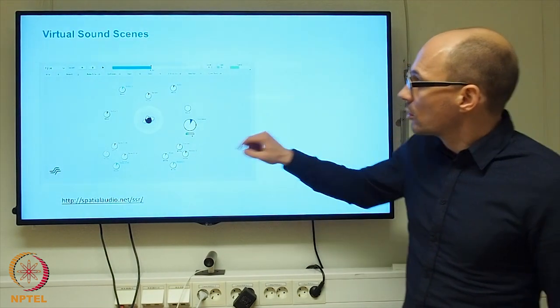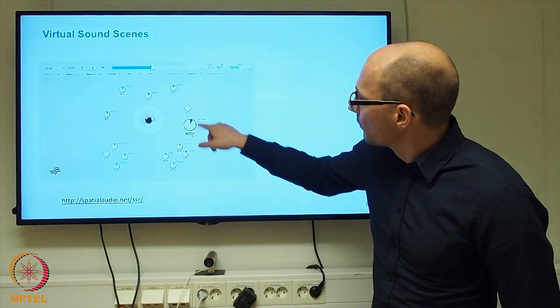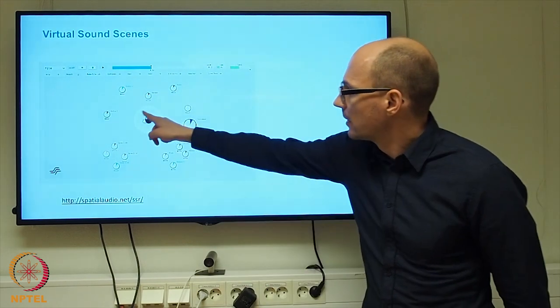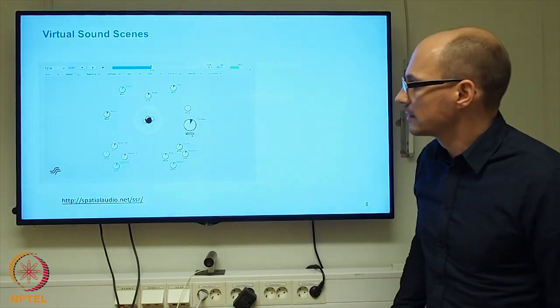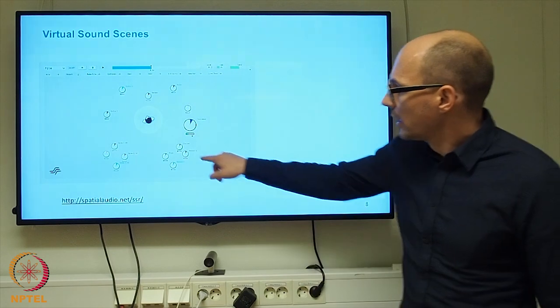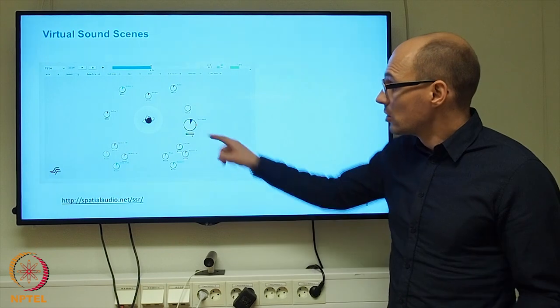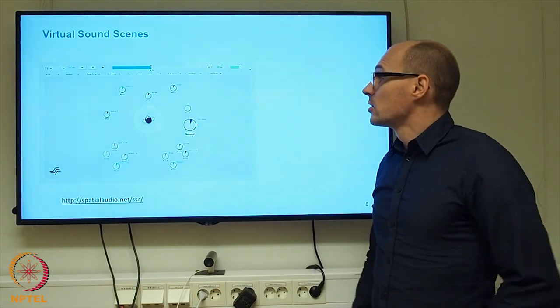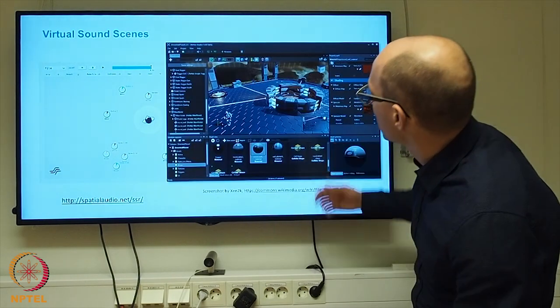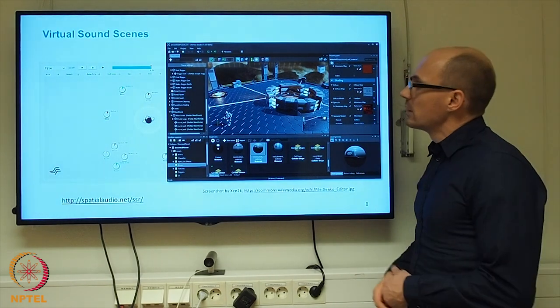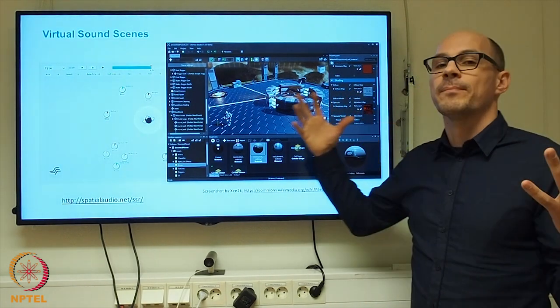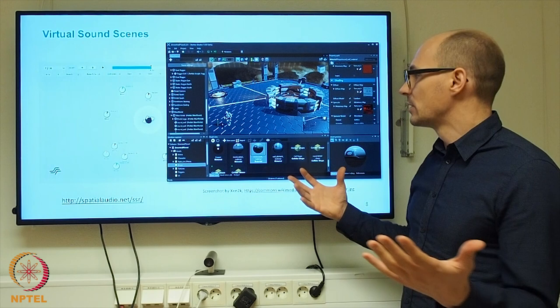So this would allow us to compose a sound scene of virtual sources, like it is the case here in the center. This little object indicates the user, and the other objects are virtual sound sources in this scene, so they all have a position associated to it. This can also look differently, like in a game engine, for example, when you're composing three-dimensional content.